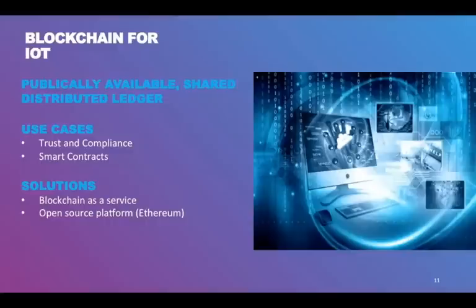In a connected world, you would see a wide variety of devices that need to be connected or transacted to get some work done in an autonomous way. For instance, take an example of a connected car solution — how do you ensure the parts being replaced in a connected car are new and genuine? Can they be from different manufacturers?